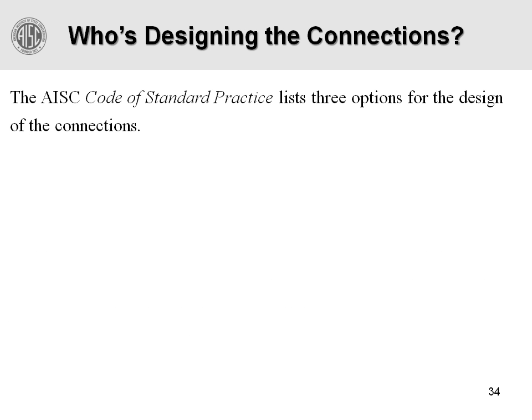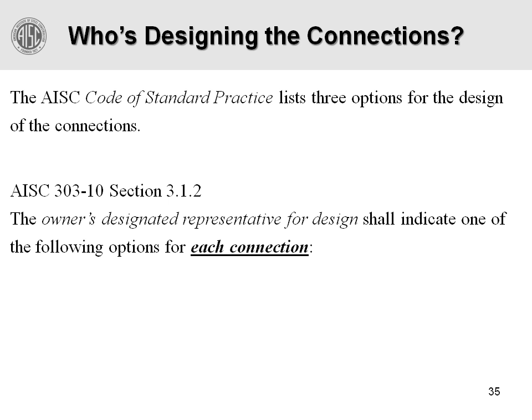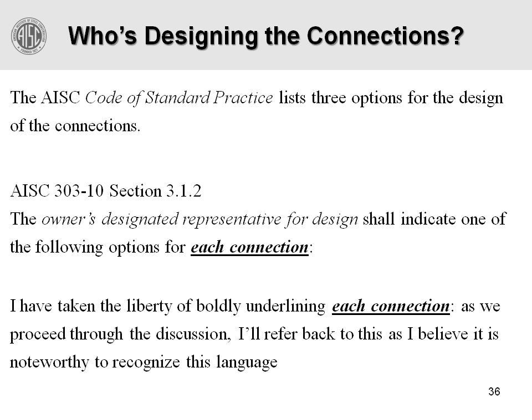So who's designing the connections? We'll talk about the 2010 version of the Code of Standard Practice and the options that the structural engineer has. The AISC Code of Standard Practice now gives three options for designating connection design, given in Section 3.1. It starts out by saying that the owner's designated representative for design — that is the structural engineer of record — shall indicate one of the following options for each connection. I have taken the liberty of bolding and underlining those two final words, 'each connection,' as I believe that is important language.